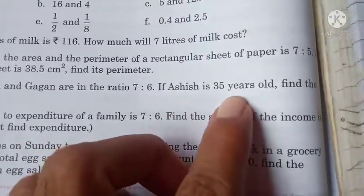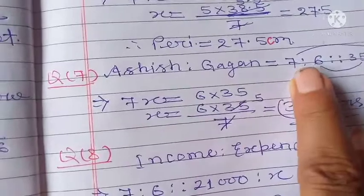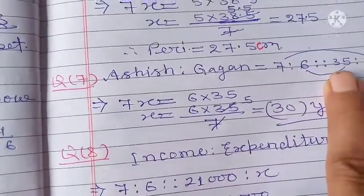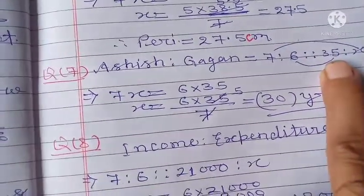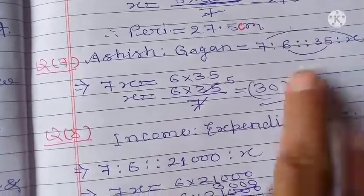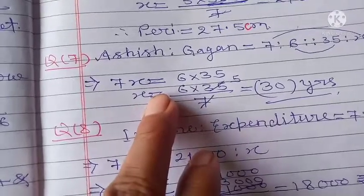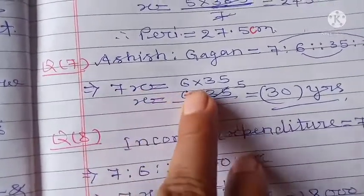Ashish is 35, so we need to find Gagan's age. We write the ratio as Ashish:Gagan equals 7:6, which is 35:x where x is Gagan's age. Using product of extremes equals product of means, we get 7x equals 6 into 35.